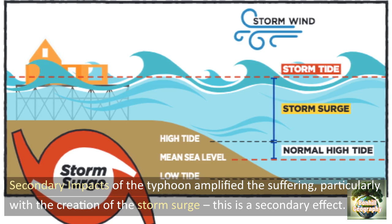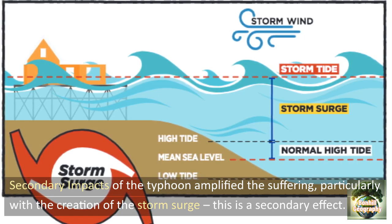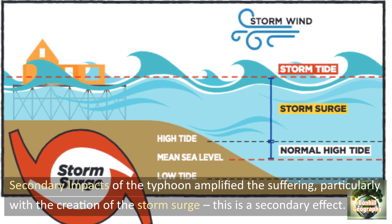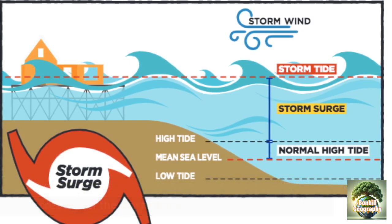Look at the low tide, the normal sea level — mean sea level and high tide. Look how much higher up the storm surge is expected to be. So even homes that were prepared, with them being on stilts, could not withstand the full force of the water.